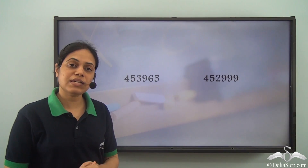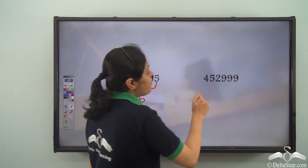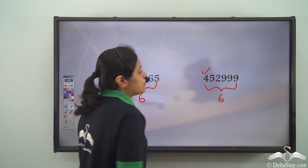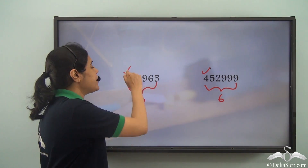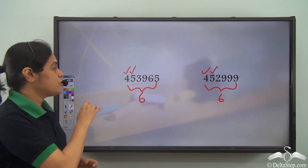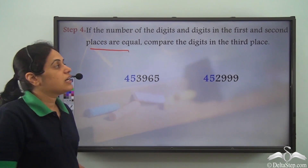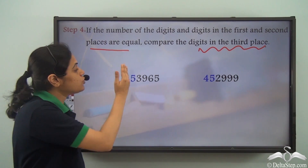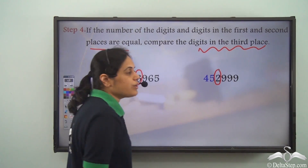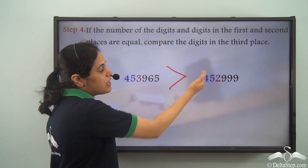Which of these two numbers is greater? Both have six digits. I compare the first digits — both are four. Then I compare the second digits — both are five. If the number of digits and the digits in the first and second places are equal, compare the digits in the third place. The digit in the third place is three here and two here. Three is greater than two, so this number is greater.